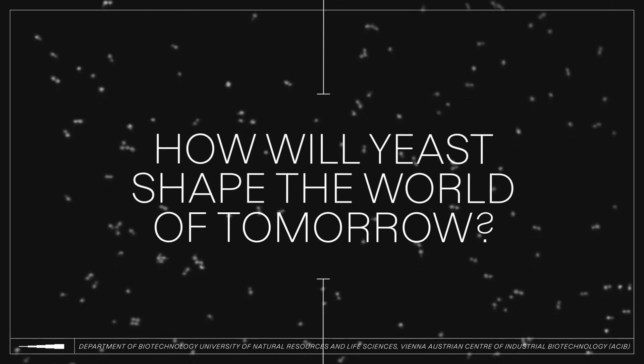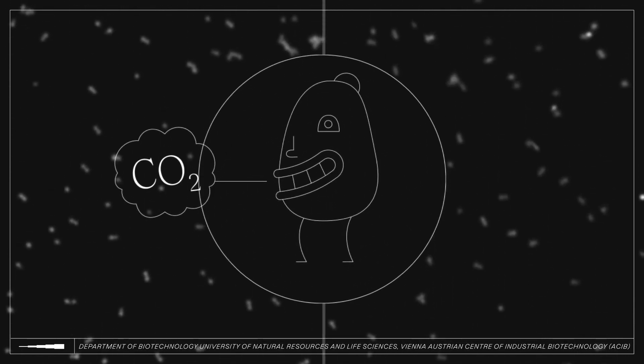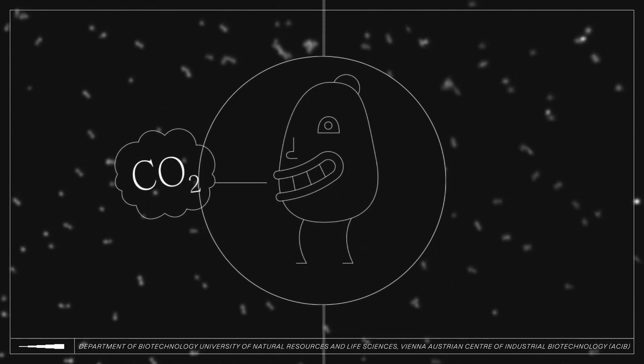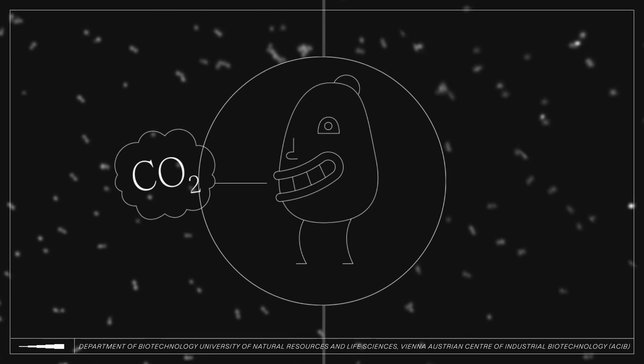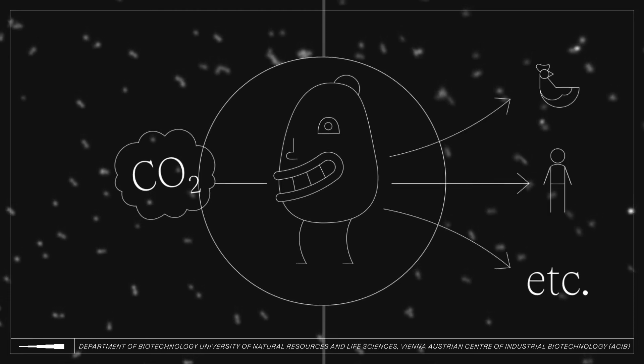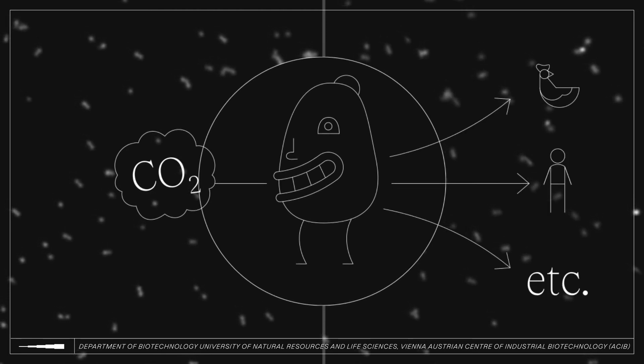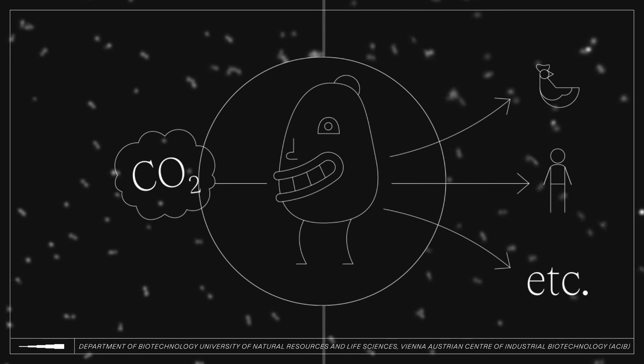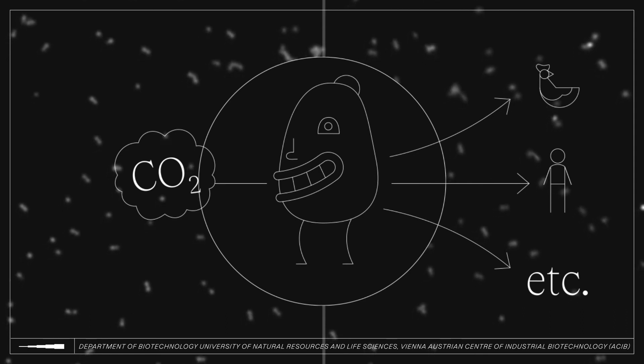Scientists at the Boku Vienna built a yeast that can absorb CO2 and convert it into other chemicals. In the future, yeast will be able to convert CO2 into biomass that can be used to feed animals, and maybe us humans.